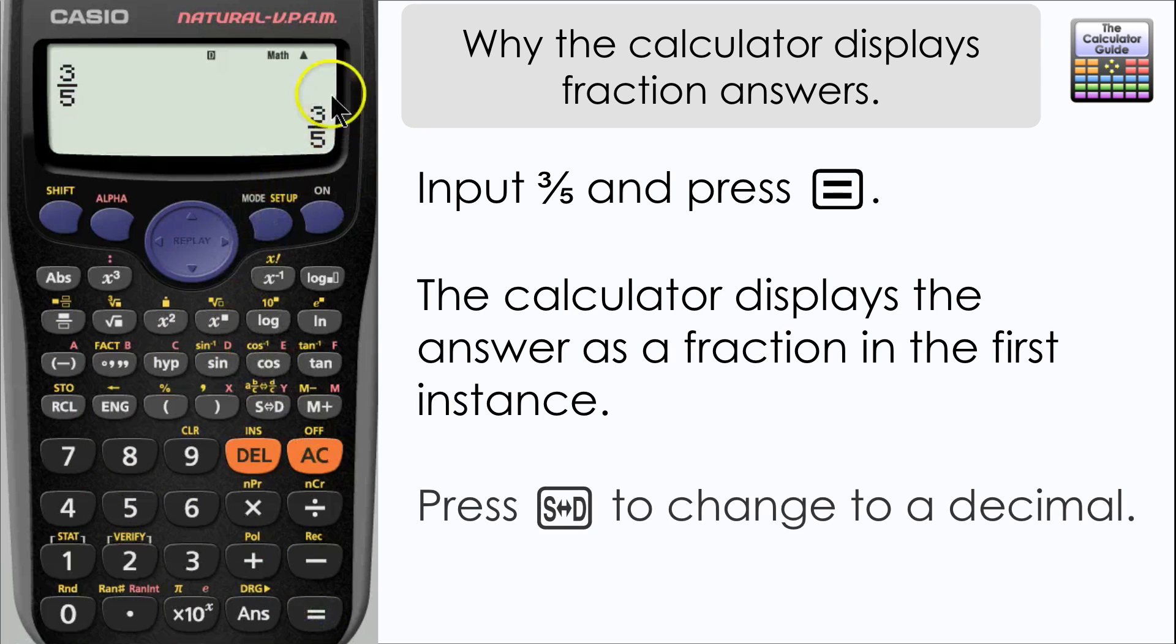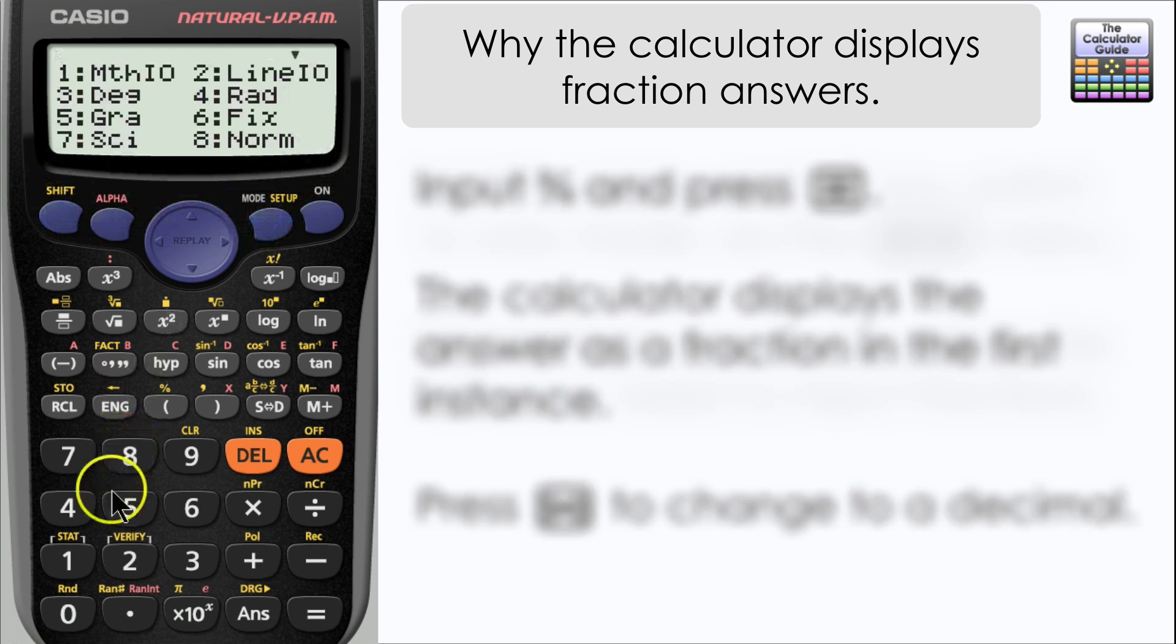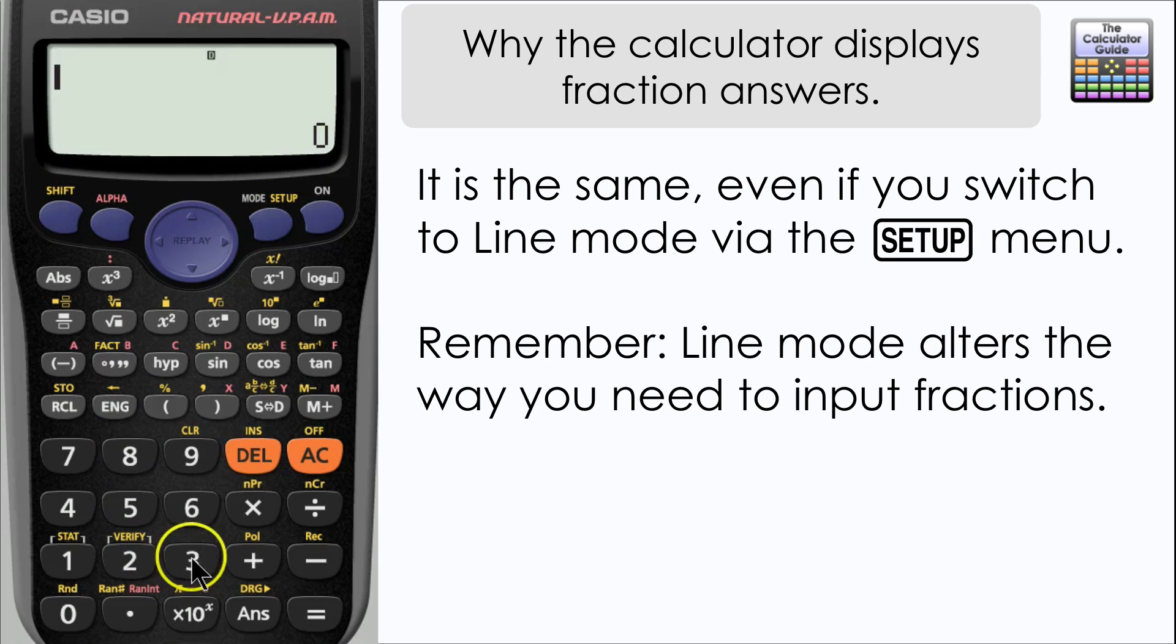If I input 3 fifths here and press equals, I just get the answer 3 fifths. The calculator by default displays a fraction in the first instance, and I have to press SD to change that to a decimal. The problem people have been asking is, well, how do I permanently get a decimal on there?